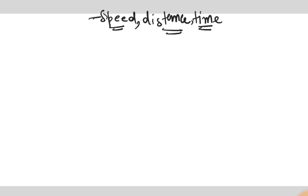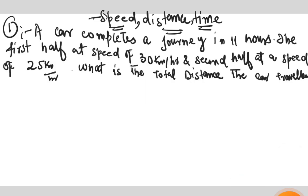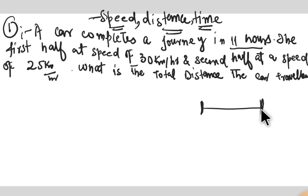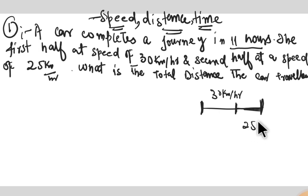Question number one: A car completes a journey in 11 hours. The first half is at a speed of 30 km per hour and the second half at a speed of 25 km per hour. What is the total distance?